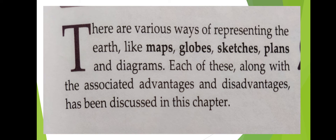Suppose we have to study and indicate all the places where a particular type of climate is found or particular crops are grown — how do we go about it? It is here that the role of geography comes in. Various tools are used to represent the various features of the earth. The most common of these tools are a map, a globe, a sketch, a plan and a diagram. Each of these, along with the associated advantages and disadvantages, has been discussed in this chapter.